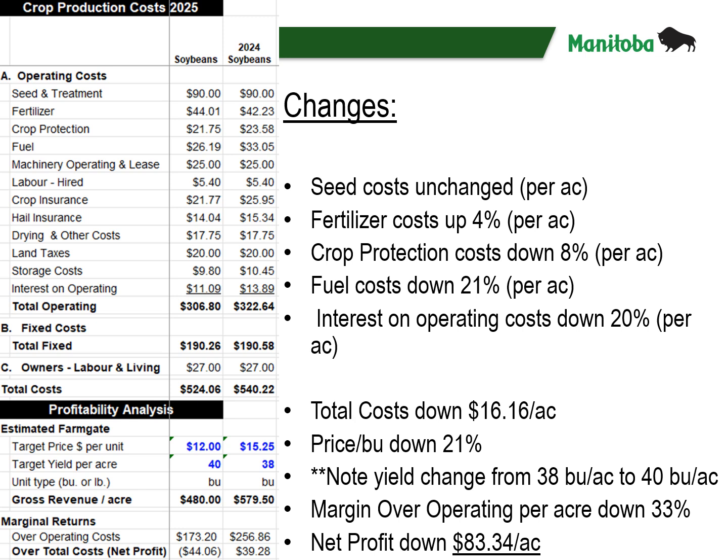This next slide shows soybeans costs of production between 2025 and 2024, with 2025 on the left and 2024 on the right. Seed costs are unchanged per acre. Fertilizer costs are up 4% per acre, largely due to the amount of phosphorus required for soybean production. Crop protection pesticide costs are down roughly 8% per acre. Fuel costs are down 21% per acre, and interest on operating costs are down roughly 20% per acre. Total costs are down $16.16 per acre. The projected price per bushel has declined by 21% between the two years. There has been a yield change from 38 bushels per acre in 2024 to 40 bushels per acre in 2025, based on Manitoba Agricultural Services Corporation average yields trending up. Margin over operating per acre is down 33%, and net profit is down $83.34 per acre, even considering the slight increase to projected yield.